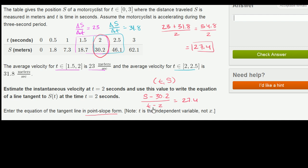And then you multiply both sides by t minus 2, and you've put it in point-slope form. So this is the same thing as s minus 30.2 is equal to 27.4 times t minus 2.